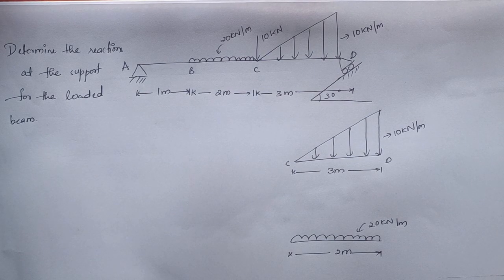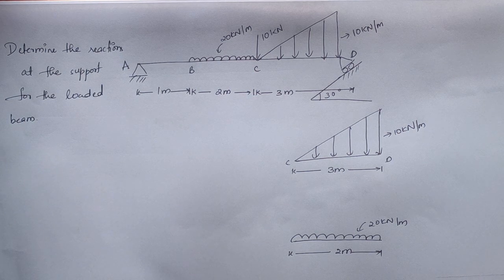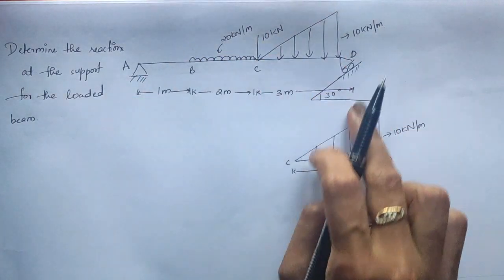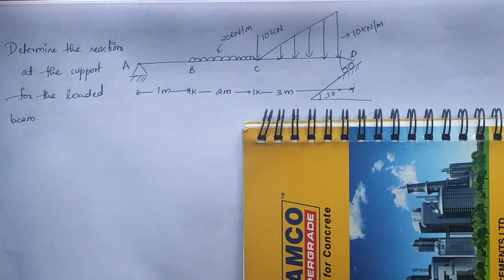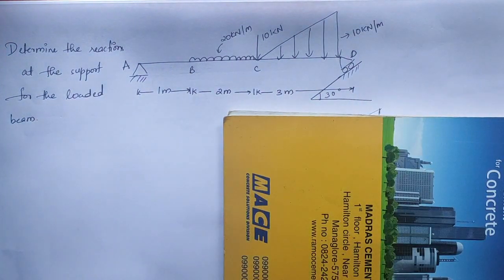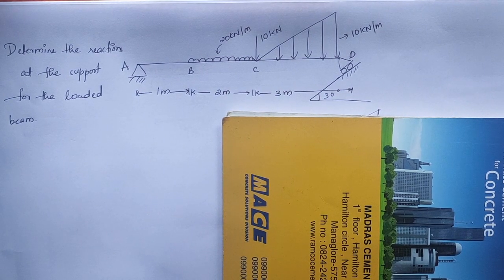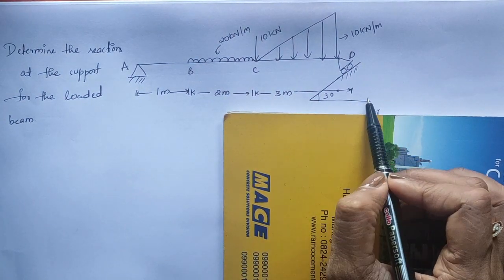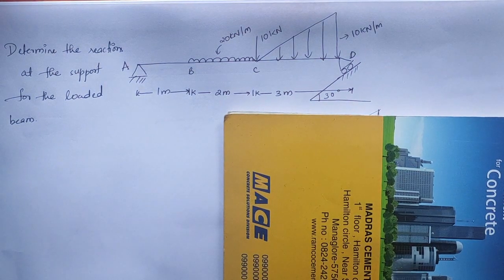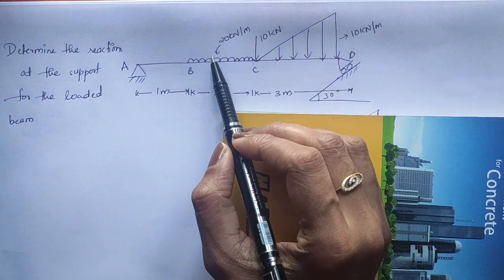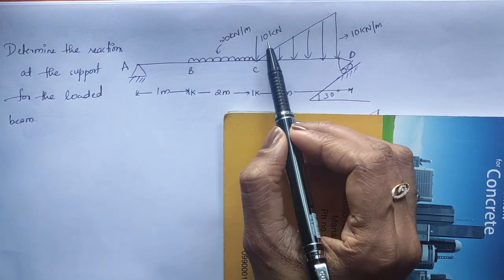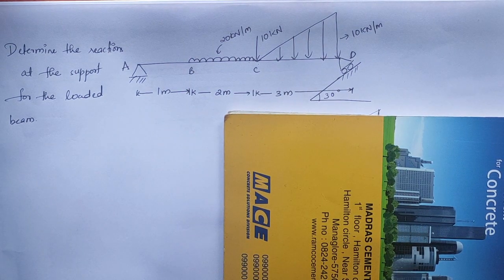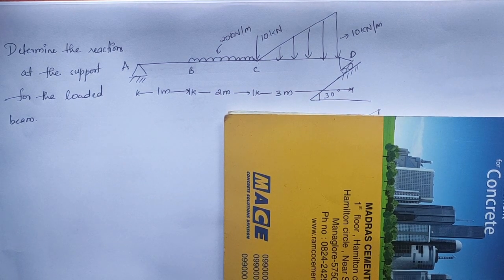Good morning everyone. Let's move on to the next problem: determine the reaction at the support for the loaded beam. As you can see in the figure, there are two supports — a hinge support at A and an inclined roller support at D with an inclination of 30 degrees. There are three loads acting: a 20 kN/m UDL, a 10 kN point load, and a 10 kN/m UVL. First, we need to draw the free body diagram (FBD).